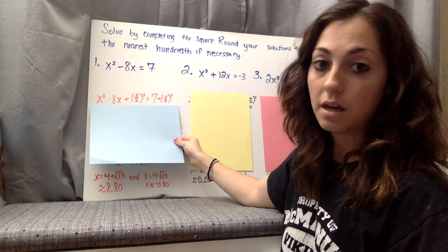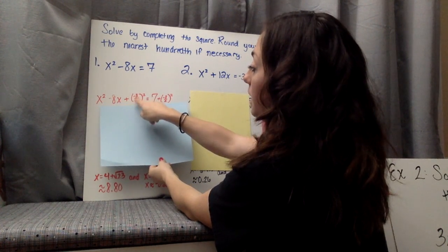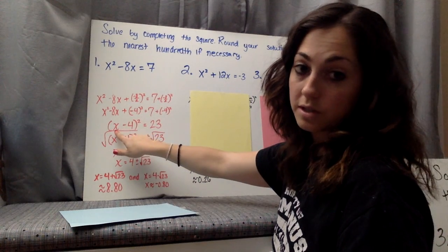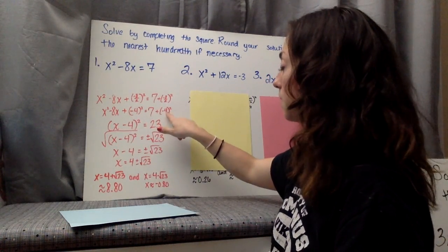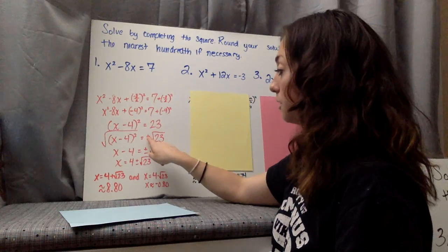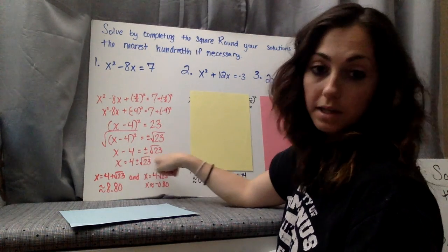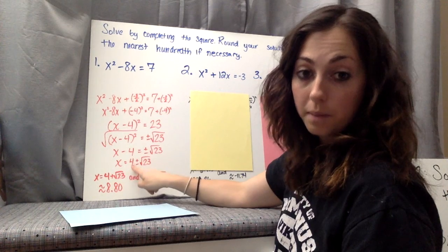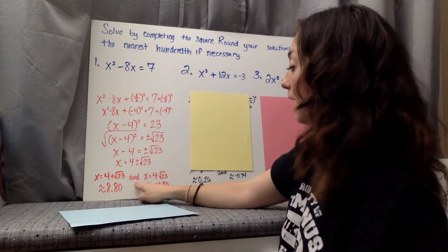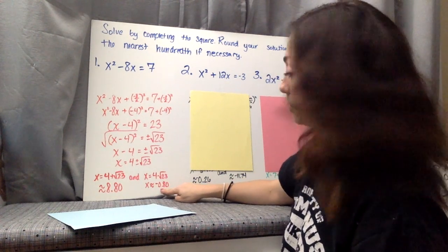Starting with Problem 1: we add half of b squared, so half of negative 8 squared is negative 4 squared. We add it to both sides. This turns into the square of a binomial, x minus 4 squared. On the right, negative 4 squared is 16, and 16 plus 7 is 23. Taking the square root of both sides with plus or minus, we get x minus 4 equals plus or minus the square root of 23, so x equals 4 plus or minus square root of 23. The two answers are approximately 8.80 and negative 0.80.